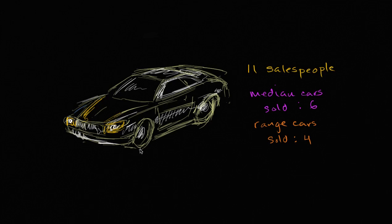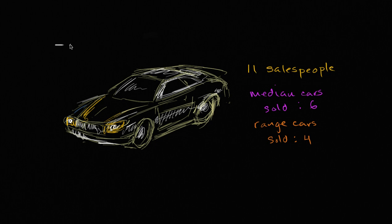Let's say that we run a car dealership and we have 11 salespeople. We record the number of cars each of the 11 salespeople sold in the past week — so that's all 11 of them. We record how much each of them sold.